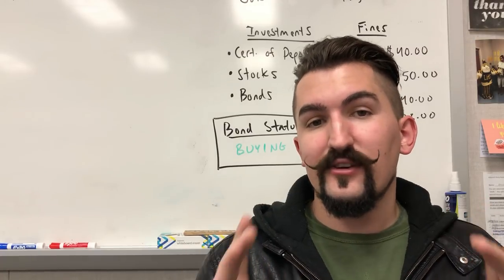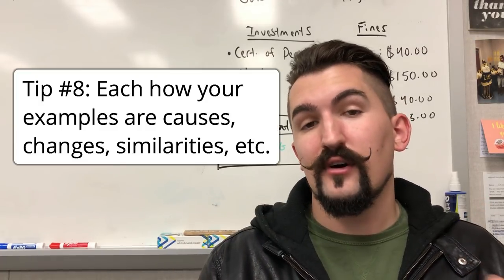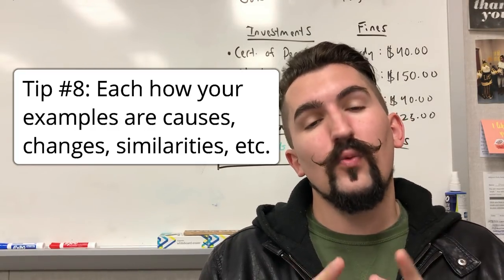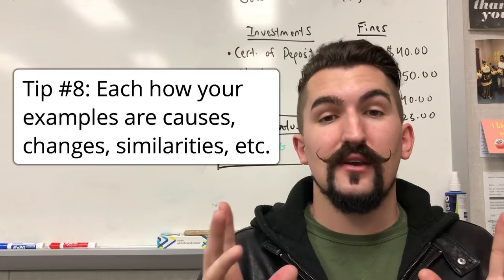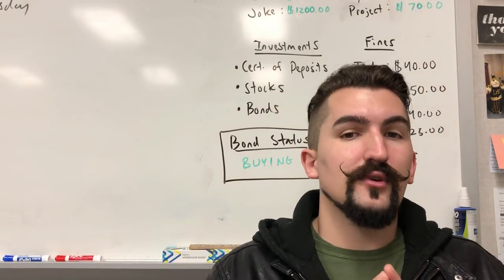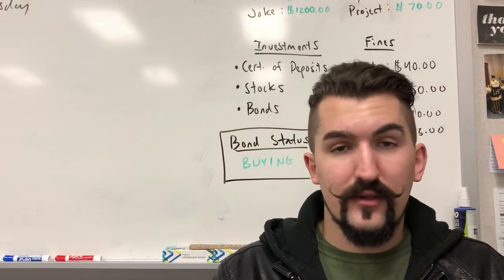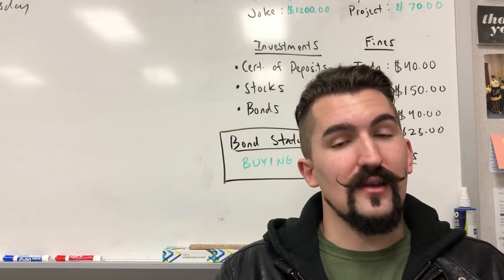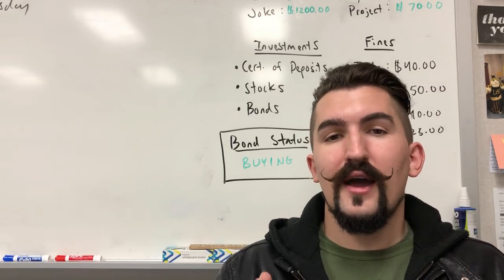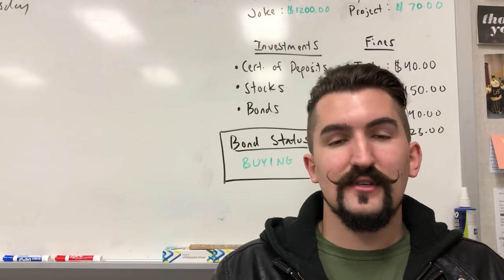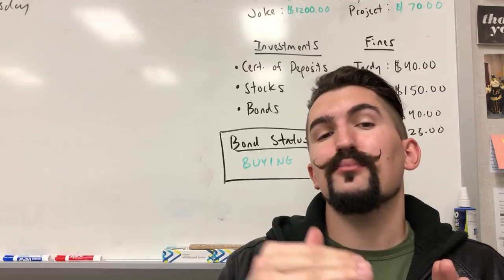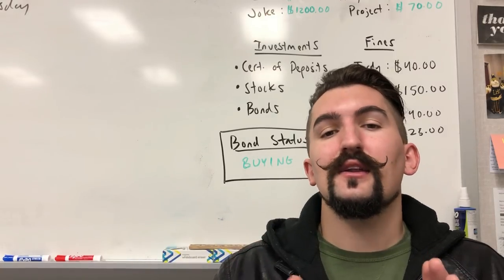In your body paragraphs, you should also specifically state and explain how things are continuities and changes, similarities and differences, or causes and responses — that is how you get one of the two analysis and reasoning points. Whatever the historical skill in question is, whether it's causation, comparison, or continuity and change over time, stick to explaining that specifically in your thesis and body paragraphs, and provide both sides. Don't just provide similarities with no differences, or changes with no continuities — you should have both in your thesis and explain both in your body paragraphs.